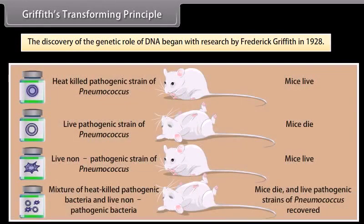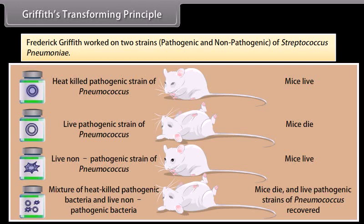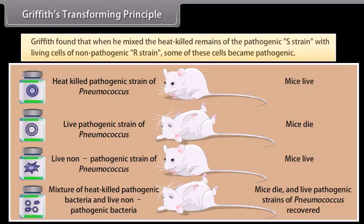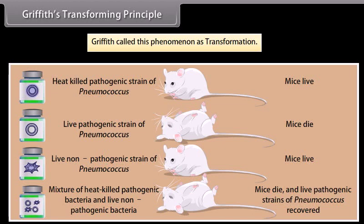The discovery of the genetic role of DNA began with research by Frederick Griffith in 1928. Griffith worked on two strains — pathogenic and non-pathogenic — of Streptococcus pneumoniae. He found that when he mixed the heat-killed remains of the pathogenic S strain with living cells of the non-pathogenic R strain, some of these cells became pathogenic. Griffith called this phenomenon transformation.